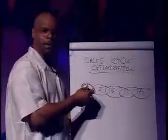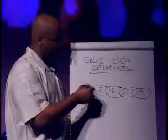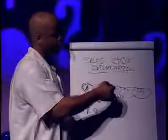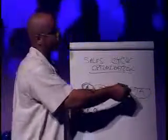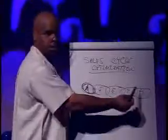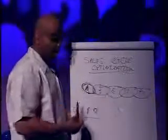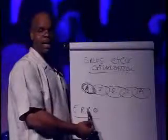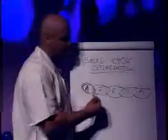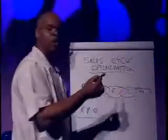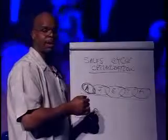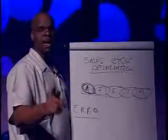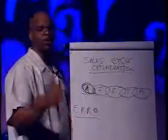Look at each cycle in this chain — the awareness, the interest, the evaluation, the trial, and the adoption. Look at each part of the chain and ask yourself: what can I eliminate? What can I reduce? What can I raise? And what can I create? By the time you're complete, you will have optimized your sales cycle. Get to work. This is Stephen Pierce, and remember, until next time, you do have the power to create profits.